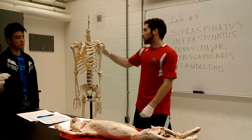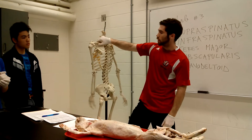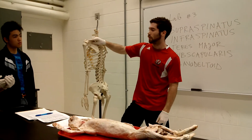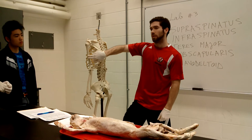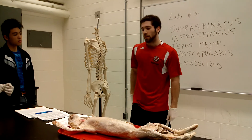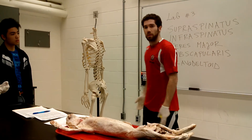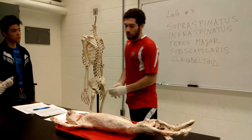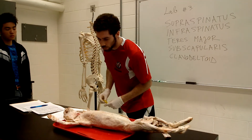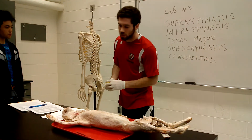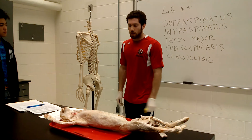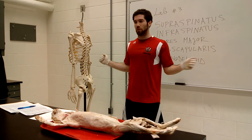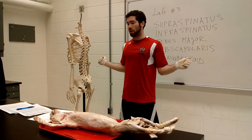Spino deltoid originates from the spinous process of the scapula and inserts into the deltoid tuberosity. It assists with extension of the shoulders — along with the lats and teres major — as well as lateral rotation of the shoulder, making it another external rotator.